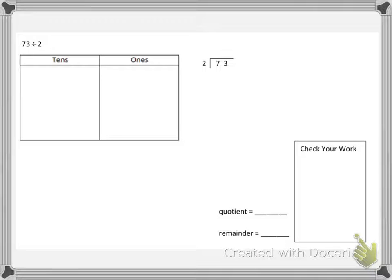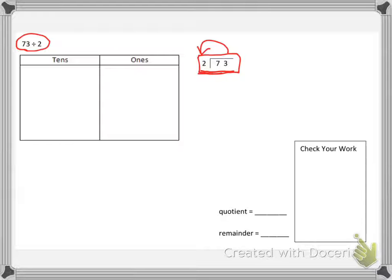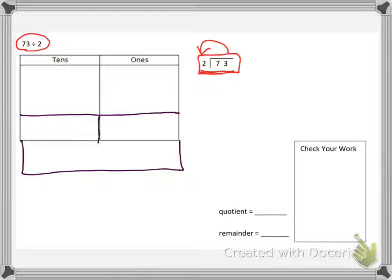Our first problem tonight is 73 divided by 2. When we see a problem like this — a division problem set up like this — we don't read it 2 divided by 73. We read it 73 divided by 2, just like the way this looks. So we want to start putting in our place value chart our tens and our ones. We're going to break up our chart here and make a line here and another line here. These are two lines because we're showing it's dividing by 2.